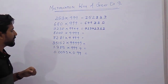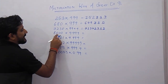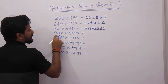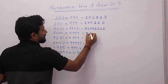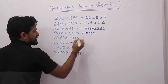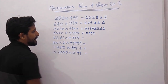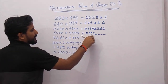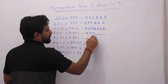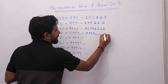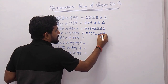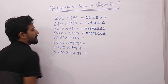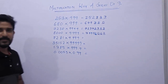Now another 4-digit example: 8000 × 9999. Decrease 8000 by 1 to get 7999. Put 4 spaces and take the 9's complement: 9 minus 9 is 0, 9 minus 9 is 0, 9 minus 9 is 0, 9 minus 7 is 2. So the answer is 79,992,000.